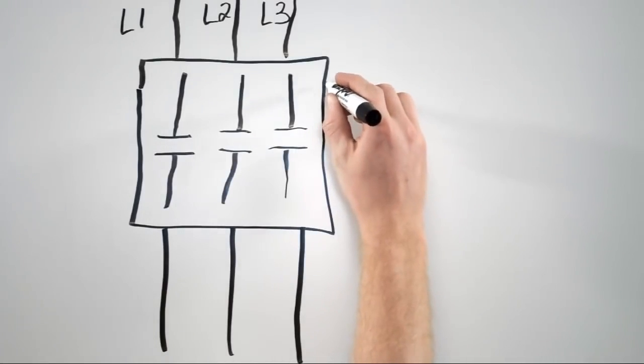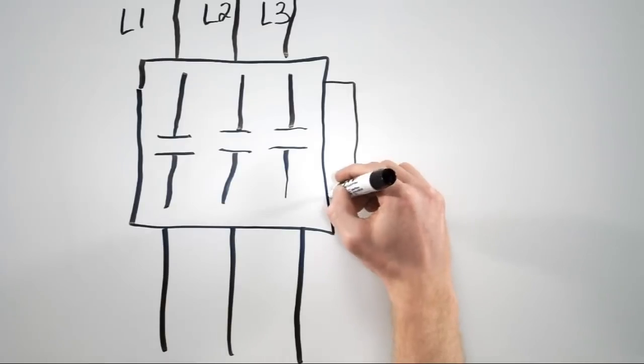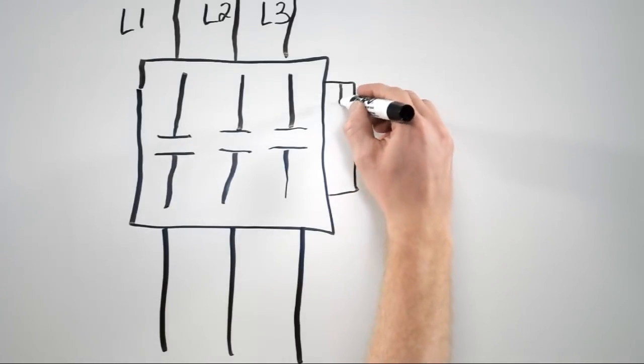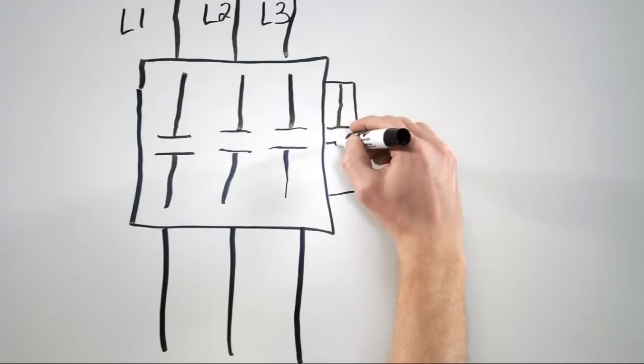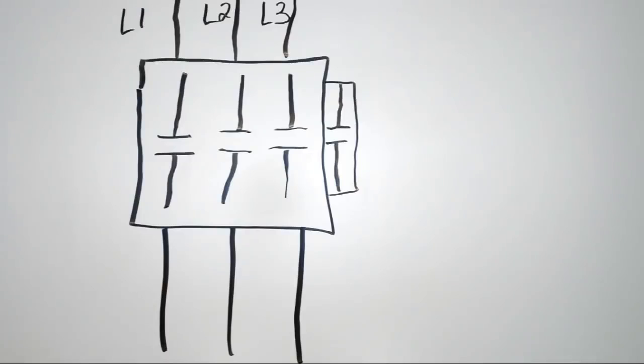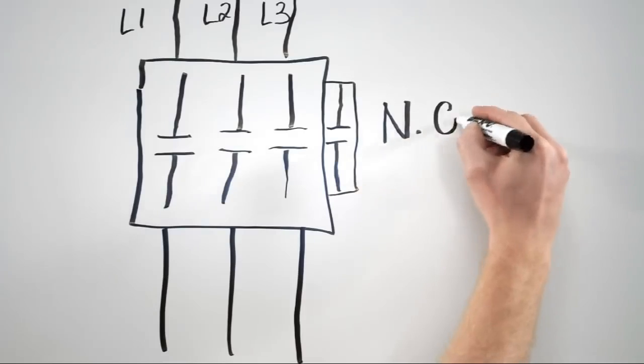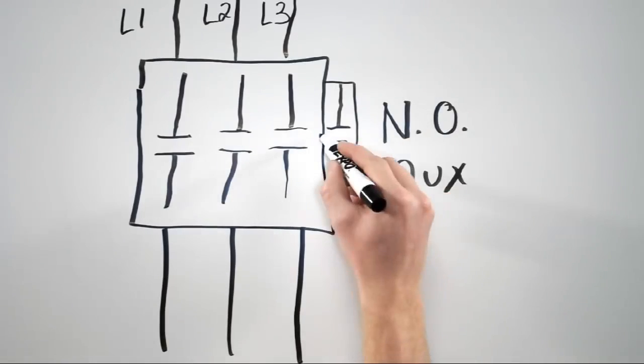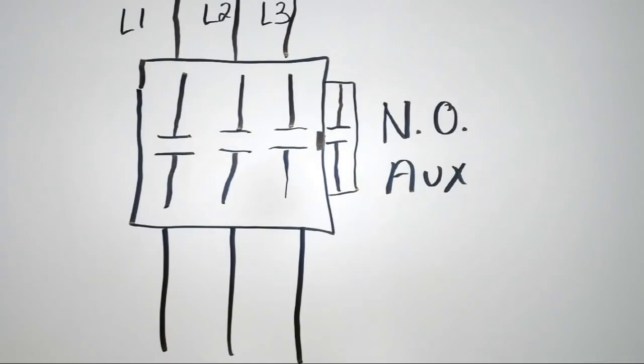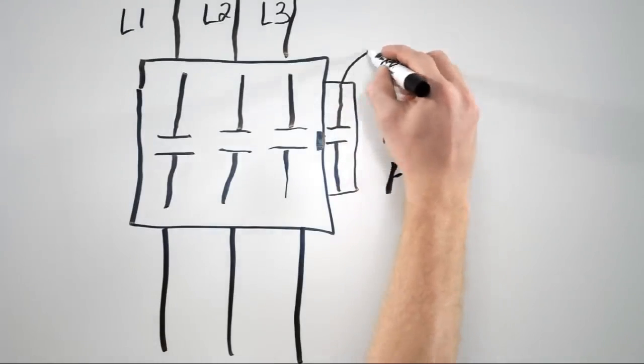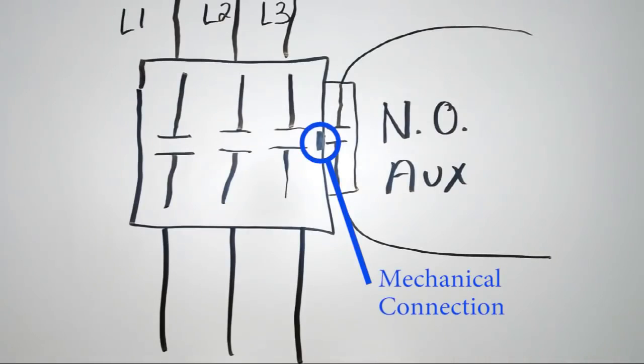Well, there is a very common accessory that gets added to contactors called an auxiliary contact. Often it's mounted to the side of the contactor, and inside the auxiliary contact module, we have an electrical contact that can be normally open or normally closed. If you grab a normally open auxiliary off of the shelf, it will not pass electricity through it unless it gets changed by an outside force. When it gets attached to the side of a contactor, there is a mechanical connection between the auxiliary contact and the moving parts inside the contactor.